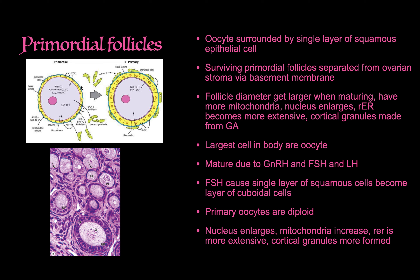Primordial follicles consist of a single layer of squamous epithelial cells. They're separated from the ovarian stroma by a basement membrane. As they mature, they acquire more organelles and more receptors for estrogen, FSH, and LH compared to other follicles. Notably, oocytes are the largest cells in the body — they have the most organelles and relatively decondensed DNA. Maturation is driven by gonadotropin-releasing hormone, FSH, and LH.